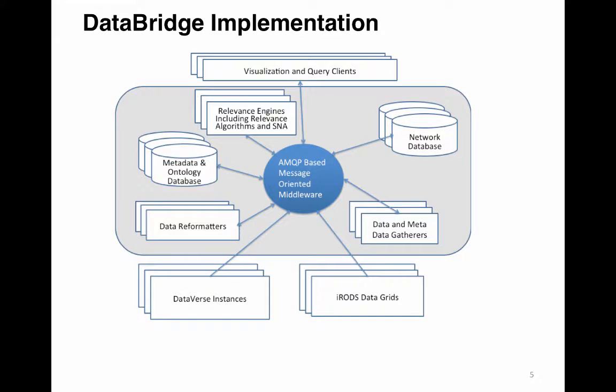To build an extensible system that can incorporate multiple types of similarity measures, an asynchronous federation approach is followed. The information sources for the analysis are either Dataverse or iRODS data grid collections. Interactions between the information sources and the network analysis are mediated by a message bus, with each information source sending messages to it. The network analysis engine retrieves the messages and builds the network database.